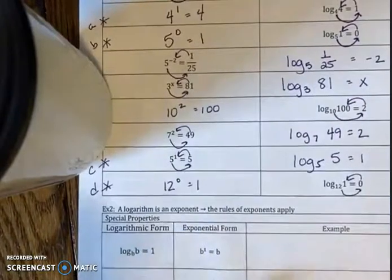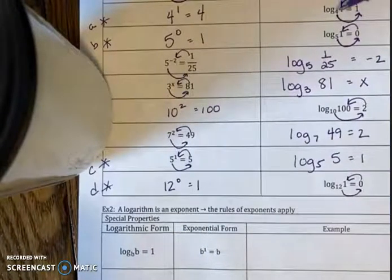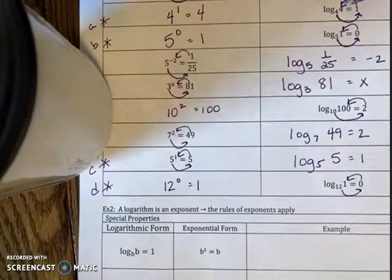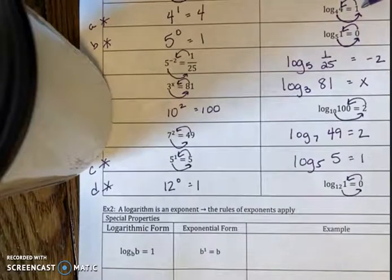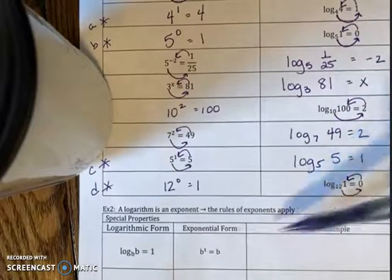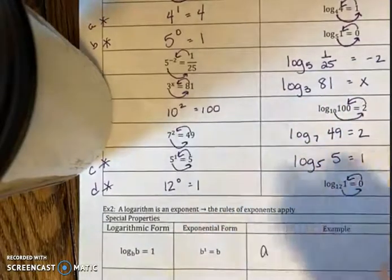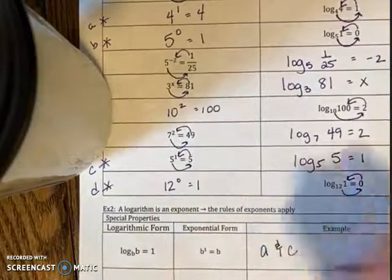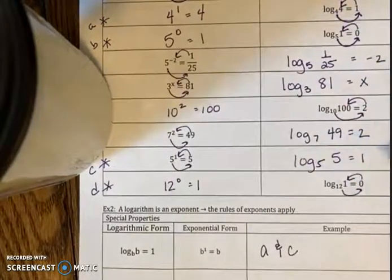So essentially what it's saying is whenever you have your base match what we're taking the logarithm of, it will always equal 1. So we could see log base 4 of 4 is 1. Log base 5 of 5 is 1. So that's this rule right here. I want you to put A and C. So again, that was log base 4 of 4 is 1. Log base 5 of 5 is 1.